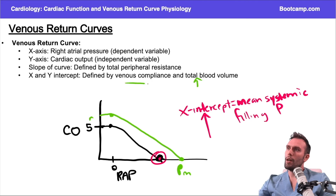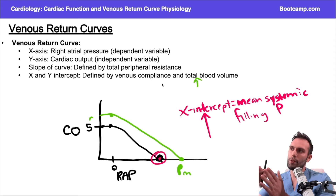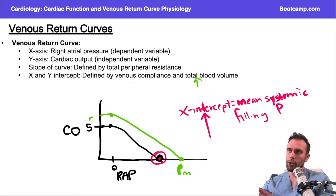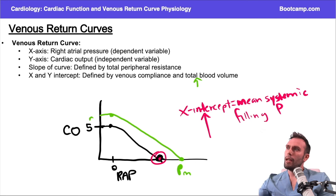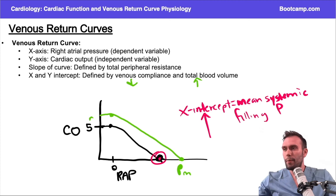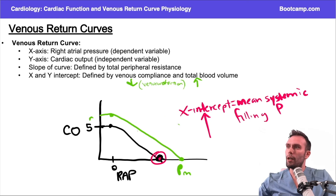The other factor is venous compliance. With venous constriction, compliance is low — you're not able to accommodate blood storage and instead shunt blood back to the heart. High venous compliance, as with venodilation from nitrates, accommodates more blood. With sympathetic nervous system activation, you get veno-constriction and lower venous compliance, shunting more blood back to the heart — increasing cardiac output and shifting the curve upward. For a given cardiac output, right atrial pressure is higher and mean systemic filling pressure is also higher with veno-constriction.